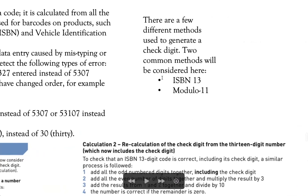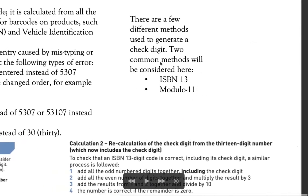Check digit follows two methods: ISBN 13 and modulo 11. Regardless of whatever method you use, there are two phases to both techniques — and any other method you may encounter in past paper questions. The first phase is the check digit calculation. The second phase is the check digit verification — always. First I have to calculate the check digit, only then I can proceed to check whether a number is correct or not according to the check digit.